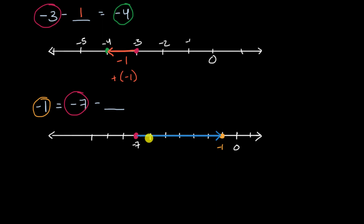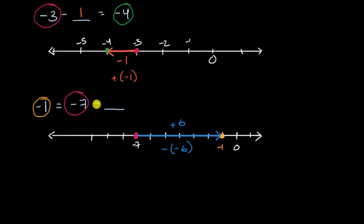Now there are two ways to describe going six units to the right. You could say that is just plus six, or you could view that as minus negative six. We've seen that subtracting a number is the same thing as adding its inverse. And since we already have a minus sign here, we might as well say this is the same thing as subtracting a negative six. I'll put it in parentheses to make it a little bit cleaner. And we're done.